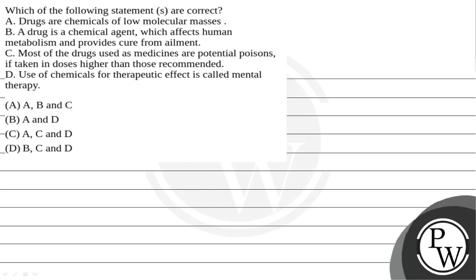Let's do this question. The question says: which of the following statements are correct? Statement A: drugs are chemicals of low molecular masses. Statement B: a drug is a chemical agent which affects human metabolism and provides cure from ailment. Statement C: most of the drugs used as medicines are potential poisons if taken in doses higher than those recommended. And option D: use of chemicals for therapeutic effect is called mental therapy.